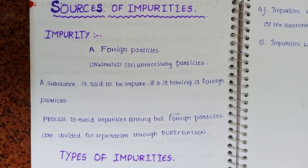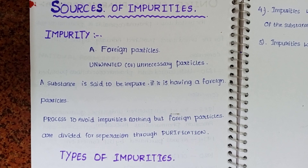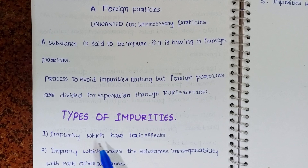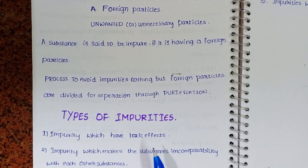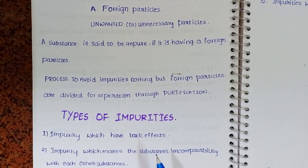Now we are going to know what are the types of impurities. There are mainly five types of impurities. The first type is impurities which have a toxic effect — those which are poisonous, harmful, and hazardous. These are impurities of a toxic nature.